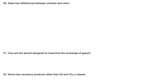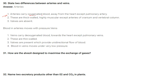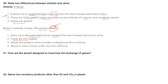State two differences between arteries and veins. Arteries carry oxygenated blood away from the heart (except pulmonary artery); veins carry deoxygenated blood towards the heart (except pulmonary veins). Arteries are thick-walled and highly muscular; veins are thin-walled. Valves are absent in arteries; valves are present in veins to ensure unidirectional blood flow. Blood in arteries moves with high pressure; blood in veins moves under very low pressure.